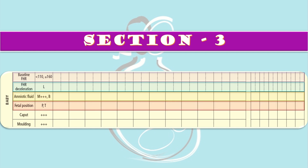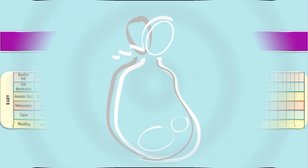For fetal position, P is used for occipitoposterior position and T is used for occipitotransverse position. For caput, plus one, plus two, and plus three denote the grades. For molding, when molding reaches plus three, we need to alert the senior midwife or senior obstetrician.